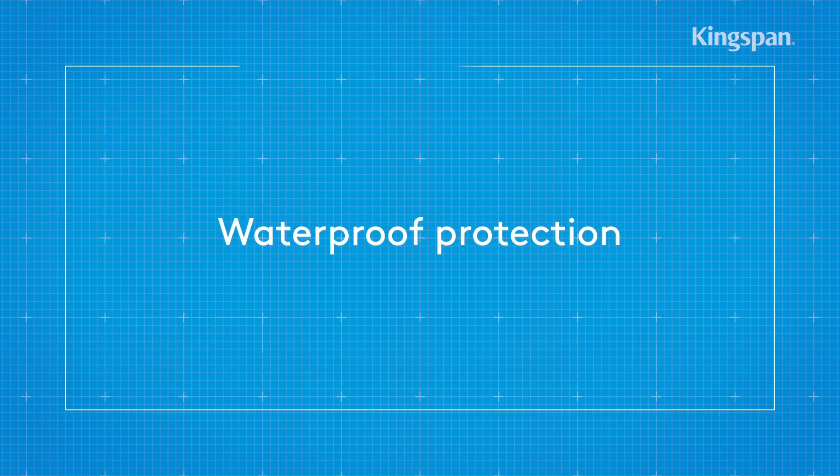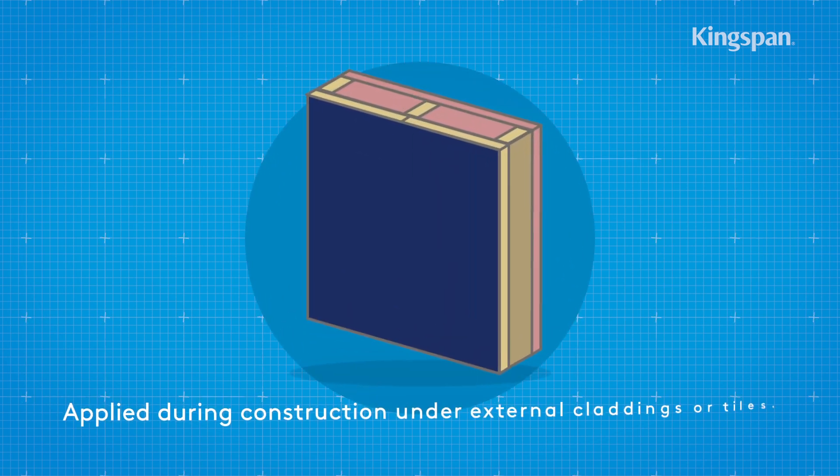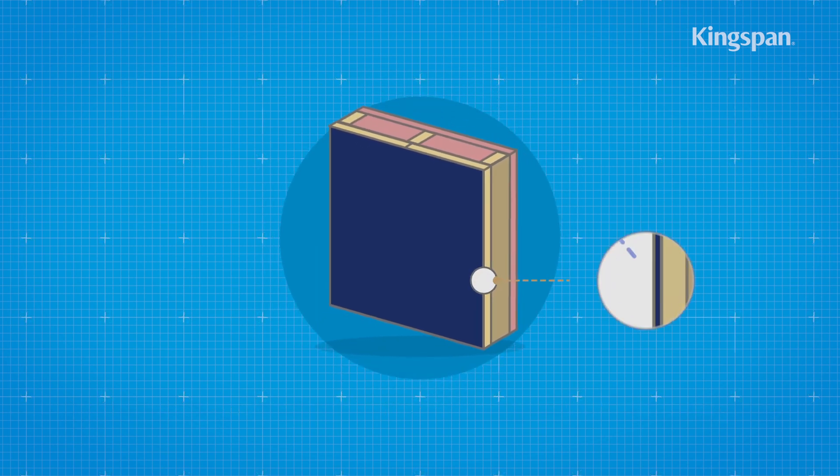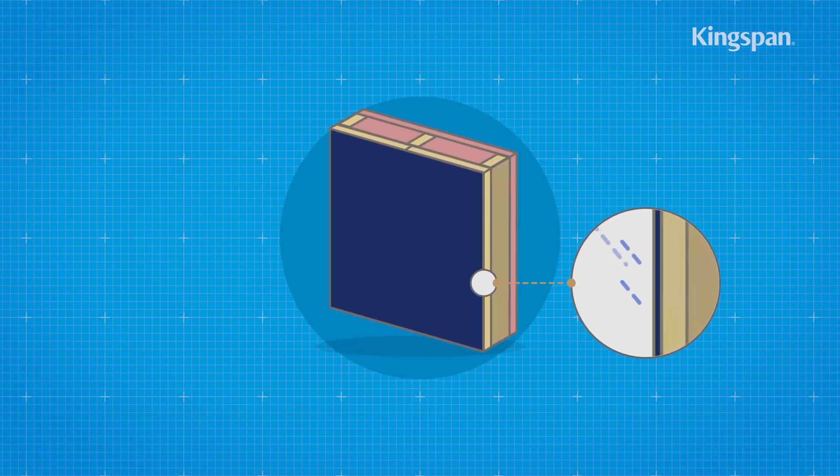Waterproof protection: Breather membranes are applied during construction under external claddings or tiles. They quickly protect the fabric of the building from rainwater penetration.